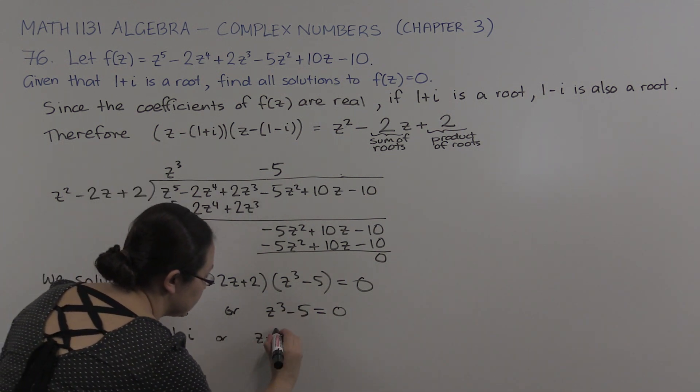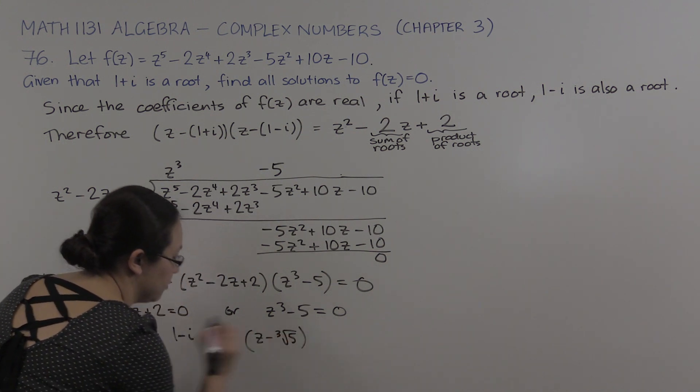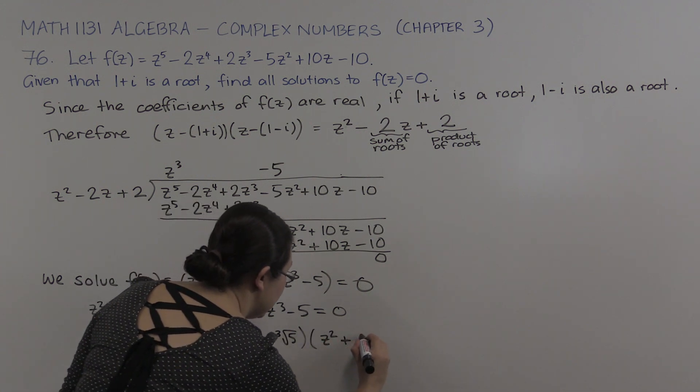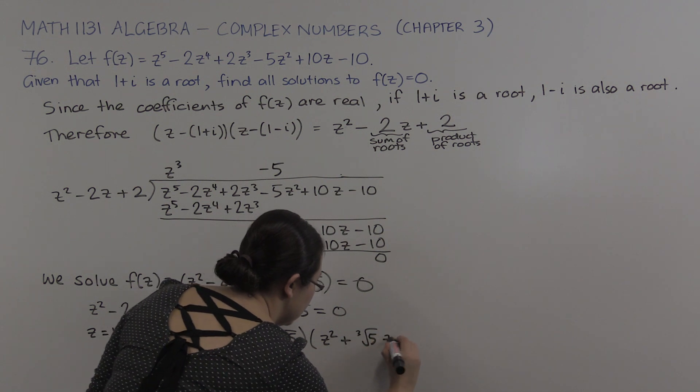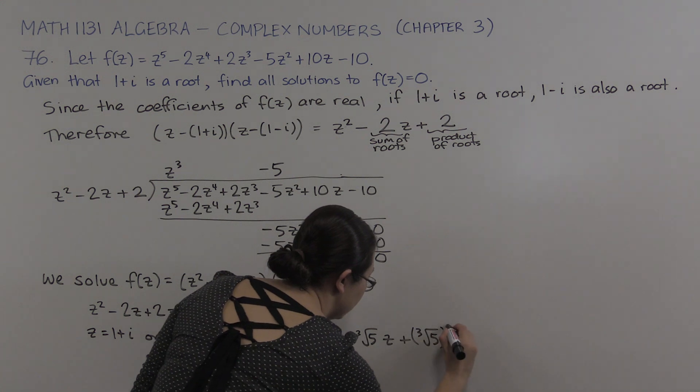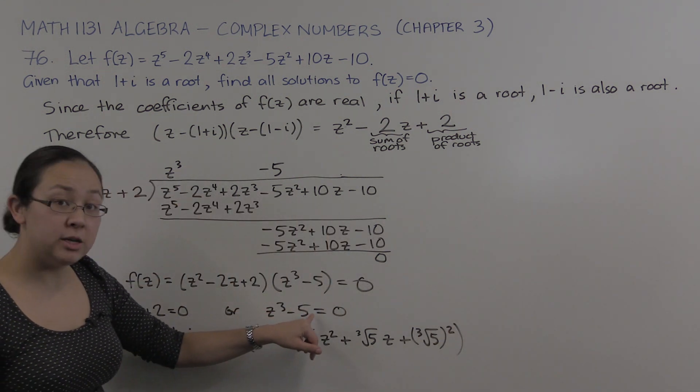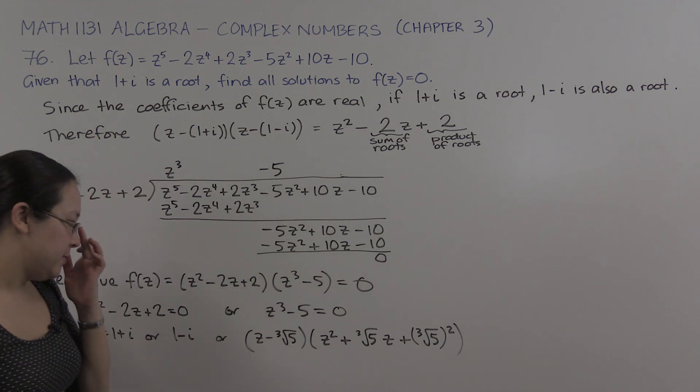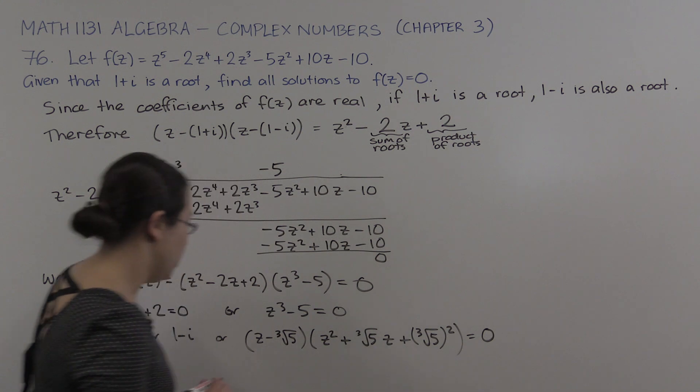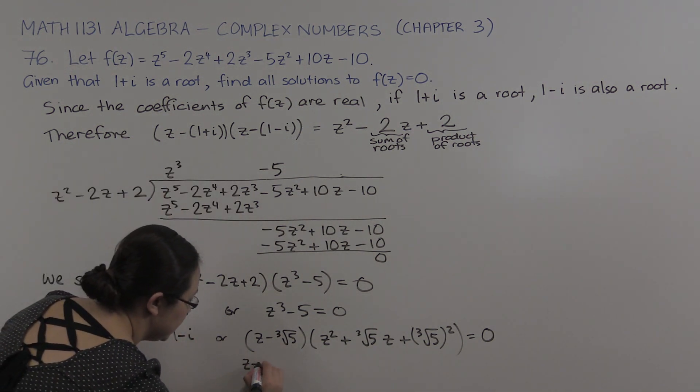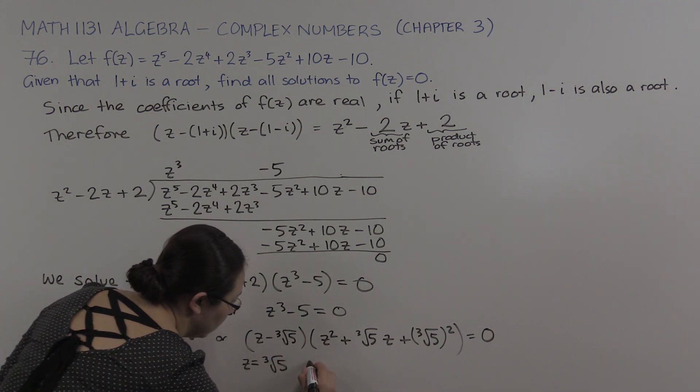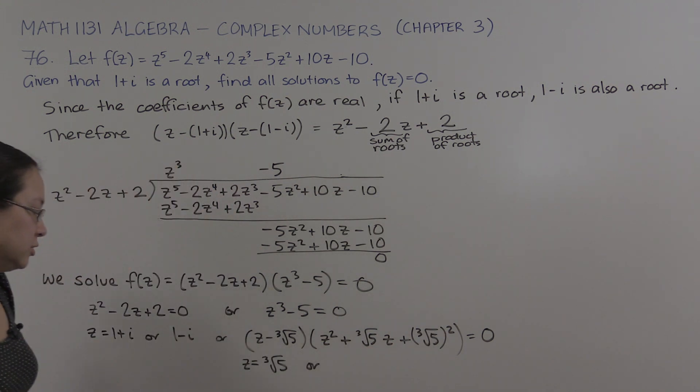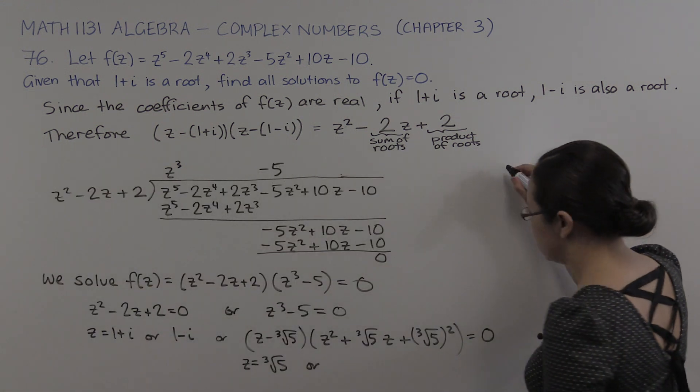So how do we factorize this? Well, a cubed minus b cubed factorizes to a minus b—that's just the cube root of 5 there—times a squared plus ab plus b squared. So a cubed minus b cubed, we have a formula for factorizing that. It's just that b is that cube root of 5 there. So I'm just using that formula to factorize this and we're trying to solve this equal to 0. Well, if that's equal to 0, then either z equals the cube root of 5 or this quadratic equals 0 should give us two other solutions. And then we would have the 5 altogether. So now all we need to do is solve the quadratic. But I have the quadratic formula and so that should be easy to do.